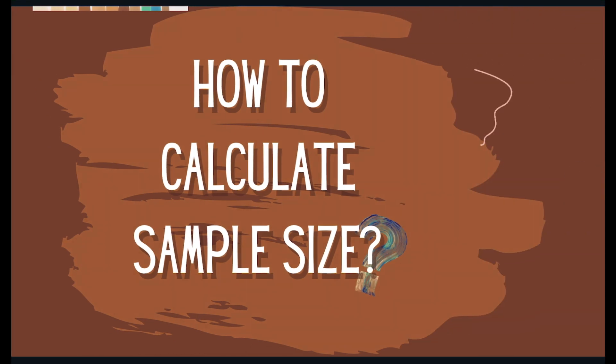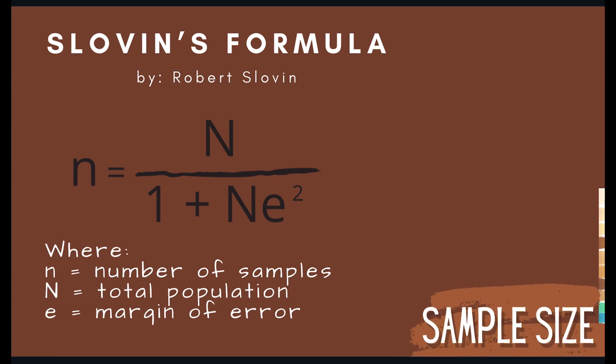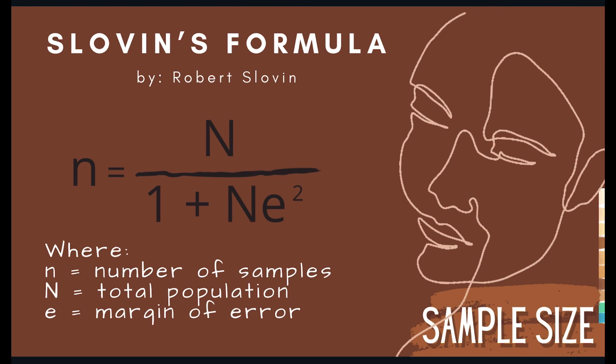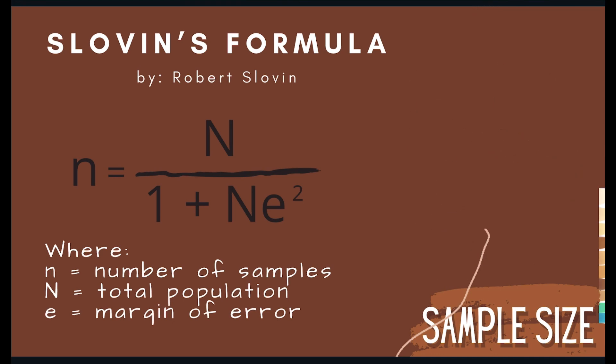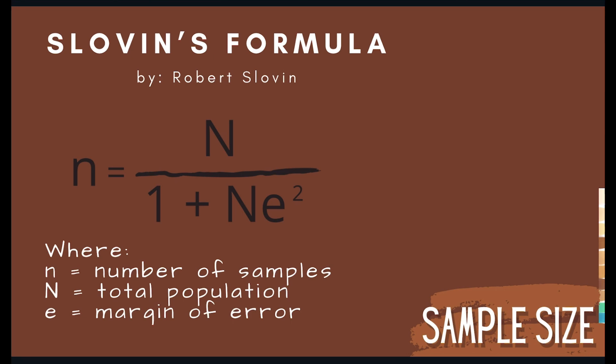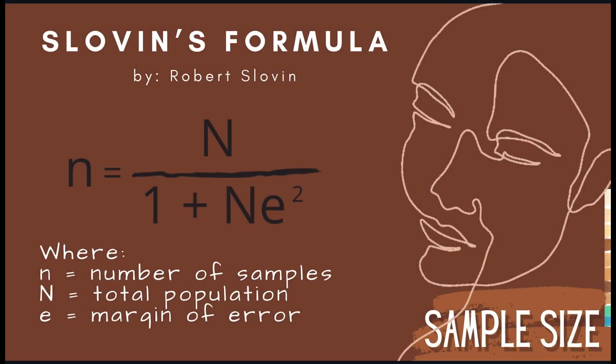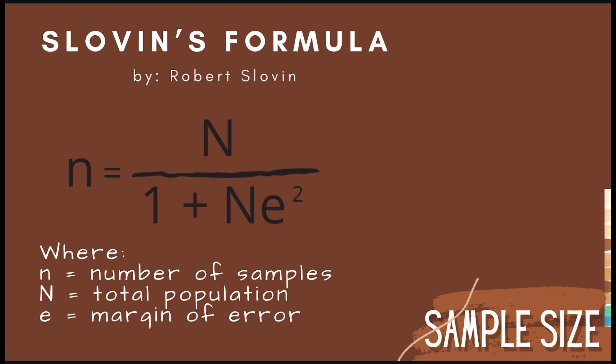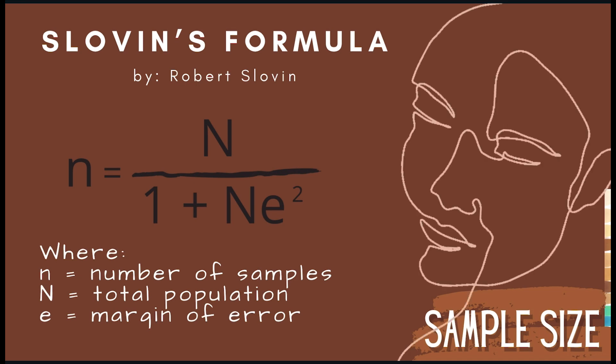How to calculate sample size? The easiest and common way of determining the sample size needed for representing a finite population of individuals would be using Slovin's formula. It was developed by Robert Slovin that aimed to determine the appropriate number of participants in a survey. This determination of sample size is based on accessibility of the number of the population. Thus, this formula cannot be used without the actual value of total number of population. The formula in determining the sample size is n equals N over 1 plus N e squared, where small n refers to the number of samples, capital N is for the total number of population, and e refers to the margin of error.